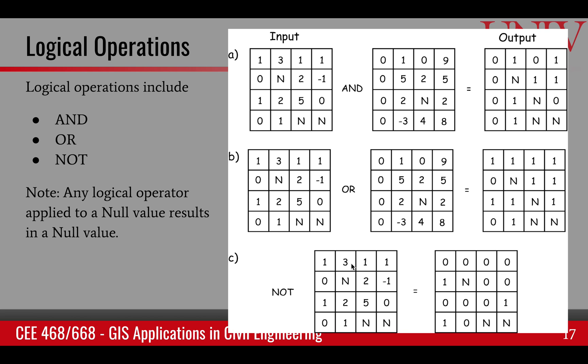NOT is just the complementation or reversal of the value. So if they are non-zero values, then NOT operation will result in false. If they are 0 values, then NOT operation will result in 1. And nulls will stay null.